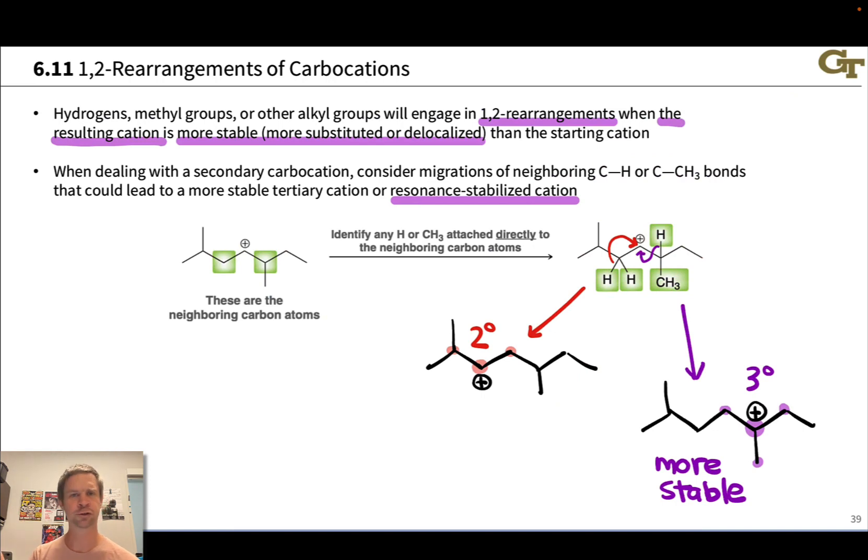One last thing I'll mention here is just to remark again that when we draw curved arrows, we show the movement of the electrons, not charge and not nuclei. So here it would be incorrect to draw an arrow starting from the plus symbol to try to show the movement of the positive charge from here to here. To do that, we actually have to move the electrons, and the electrons move kind of the opposite direction of the positive charge. Keep this in mind when you're drawing electron flows for 1,2-rearrangement steps.